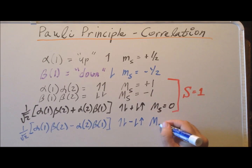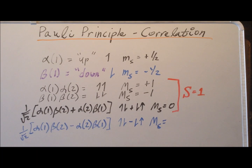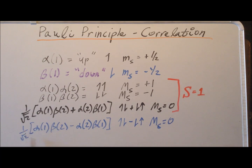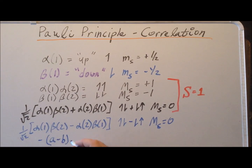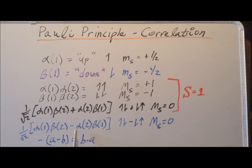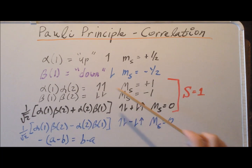What about the value of M_S here? M_S for the first term is plus one half minus one half, which is zero, and similarly for the second term. So M_S equals zero. But this term is antisymmetric: if we swap the first and second electrons, we get alpha(2) beta(1) minus alpha(1) beta(2), which is exactly the negative of the original — using the trick that negative of (a minus b) gives (b minus a). So this really is antisymmetric and distinguishable from the triplet state.